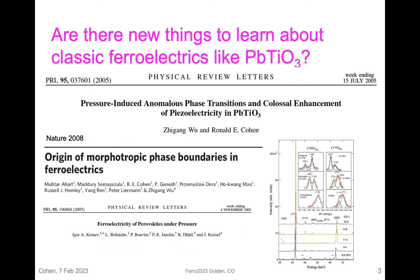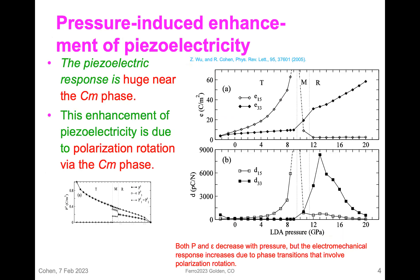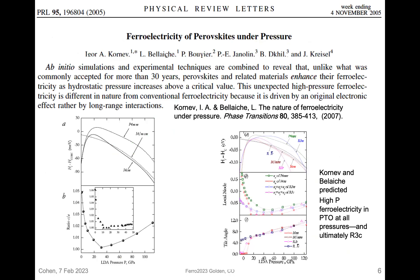Classic materials like lead titanate or barium titanate — there's a wealth of new things to learn about them in spite of them being kind of the sodium chloride of ferroelectricity. There was this work by Kornev and Bellaiche, from around 2005, and what they found in their DFT calculations was that ferroelectricity re-enters and comes back in barium titanate and lead titanate with pressure.